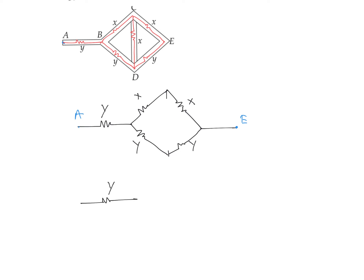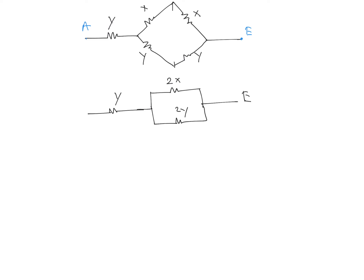After applying the Wheatstone bridge simplification, we have a resistor of resistance Y on one branch, a resistor of resistance 2X on another, and a resistor of resistance 2Y leading to point E. The two resistors 2X and 2Y are connected in parallel, and that parallel combination is in series with Y.